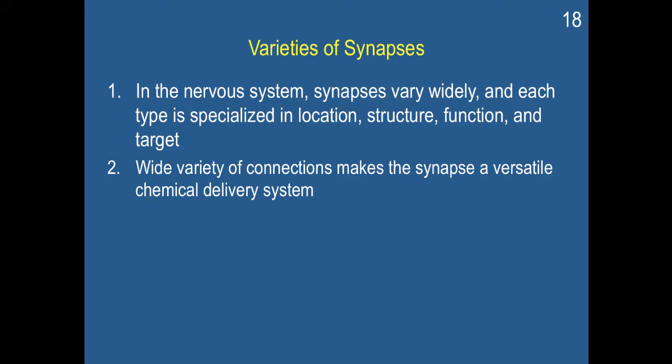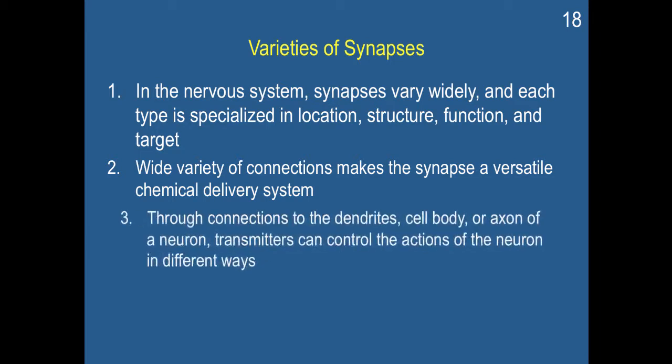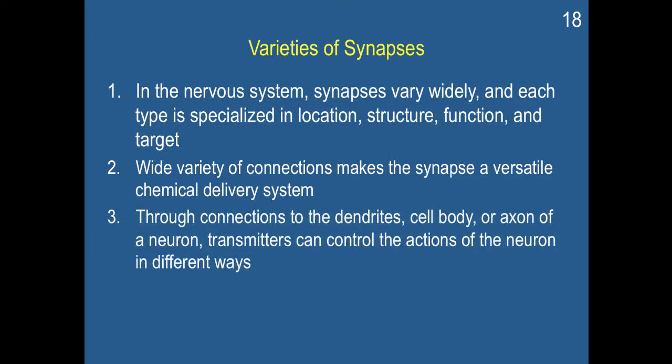The wide variety of connections make the synapse a versatile chemical delivery system. And through connections to the dendrites, cell body, or axon of a neuron, transmitters can control the actions of the neuron in different ways and can therefore have more selective effectiveness.